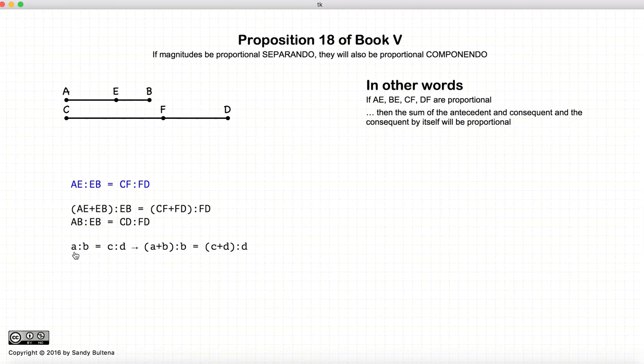This proposition is stating that if we have two ratios, A to B and C to D, that are equal, that also means that A plus B to B would be equal to C plus D to D.